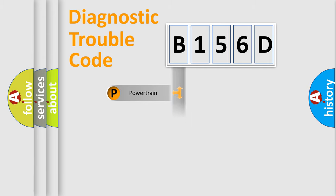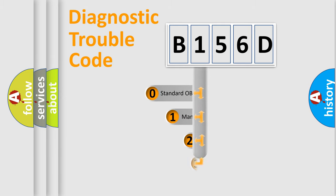powertrain, body, chassis, network. This distribution is defined in the first character code.